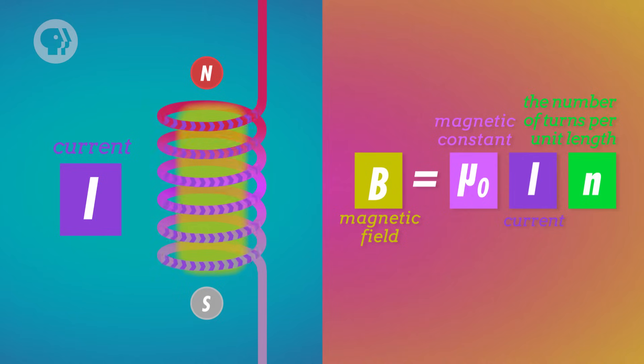It says that the magnetic field inside the coils, B, is equal to the magnetic constant times the current running through the coils times the number of coils. So that's what happens when loops of wire create a magnetic field.